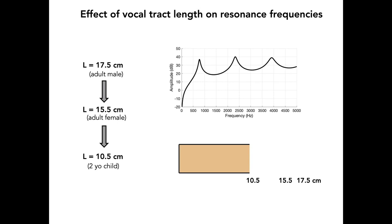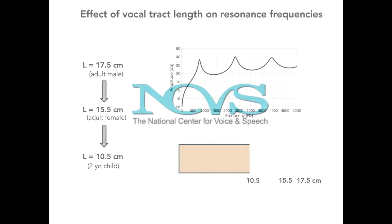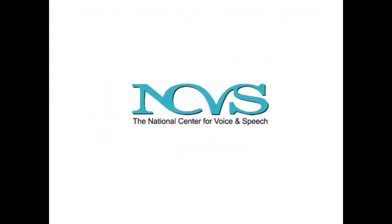Had shorter vocal tracts been used for animating the standing waves at each resonance frequency, the patterns of pressure variation along the vocal tract would have appeared essentially the same. The difference would simply be that the standing waves occur at higher frequencies. This concludes the tutorial on vocal tract resonances and their associated standing waves.